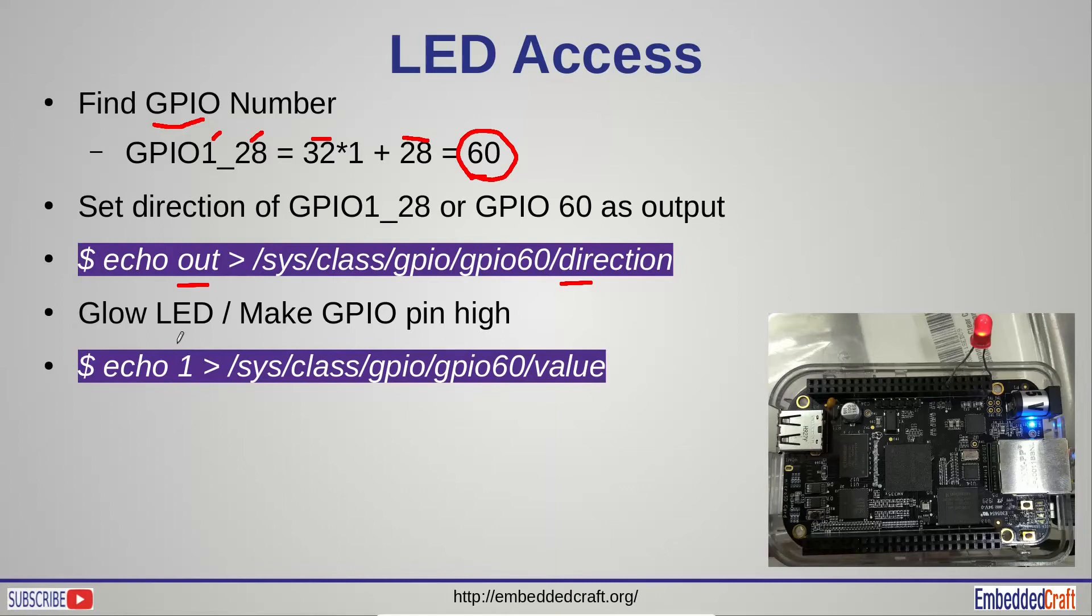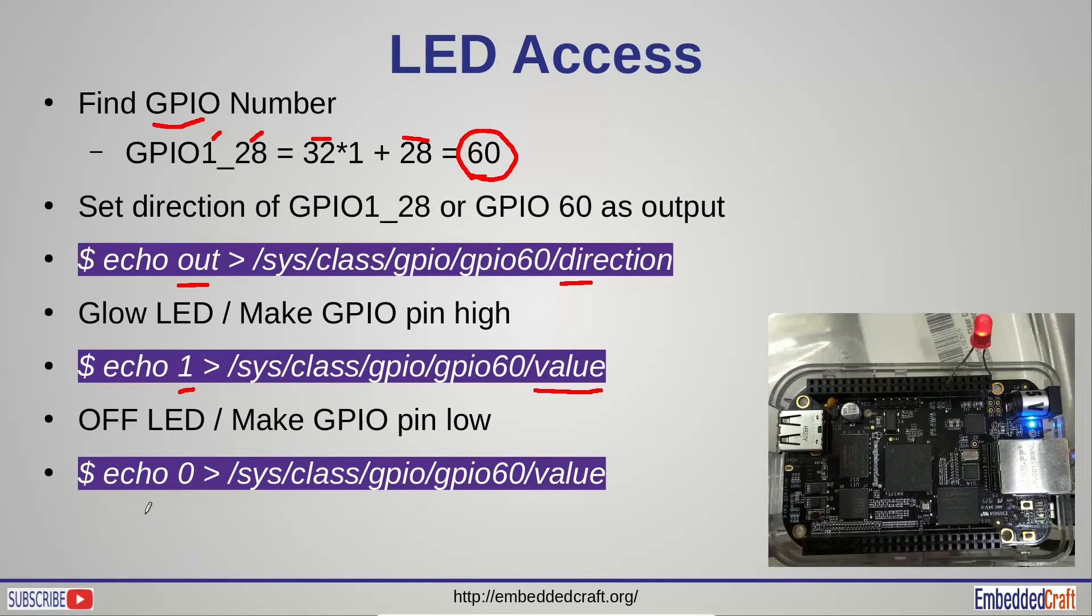To glow LED we have to make GPIO pin high. We have to write 1 to value file. Command is echo 1 root sys class GPIO-60 value. To switch off LED we have to make GPIO pin low. For this we have to write 0 to value file.